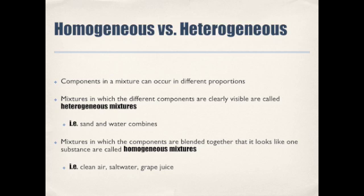If you had a beaker of water with salt in it, how would you know if you didn't taste it? You look at it and for all you know it could just be water. A homogeneous mixture is one where the components are blended together so it looks like one substance. Examples include clean air, salt water, and grape juice — the consistency is the same throughout.